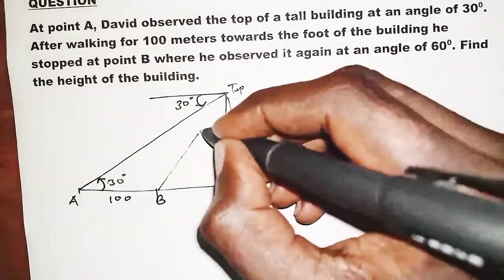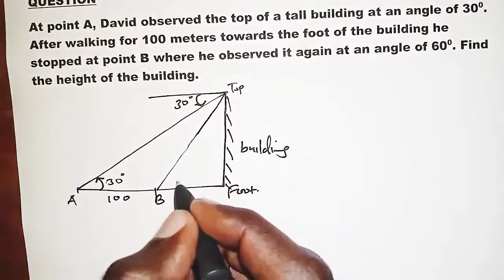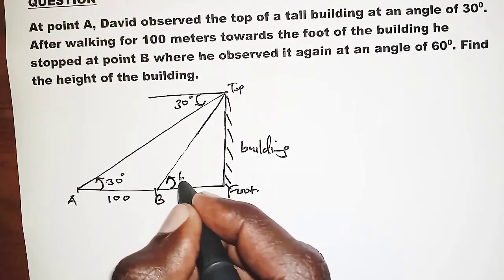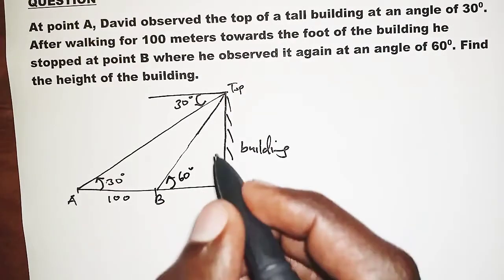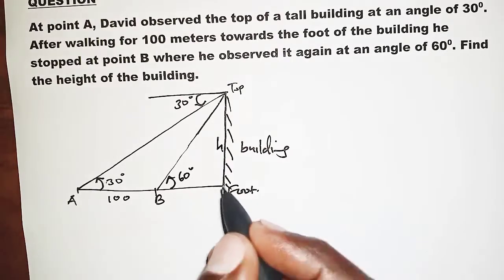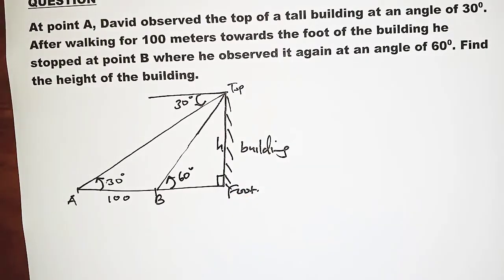And at point B we are told that the angle of elevation was 60 degrees. And then the question we are asked is to find the height of the building. So the building is at 90 degrees with the ground.